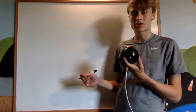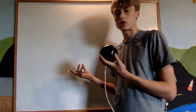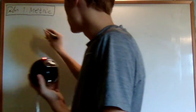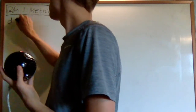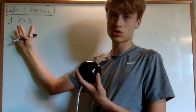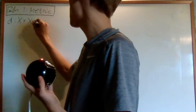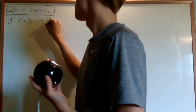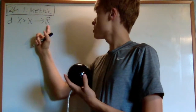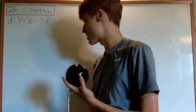In this video, I'll be introducing the metric topology. The first definition is going to be of a metric. A metric is a function that takes in two elements of a set — some elements of X cross X — and it outputs a real number. The real number it outputs is called the distance. A metric is a distance function, so between x and y, I find the distance.